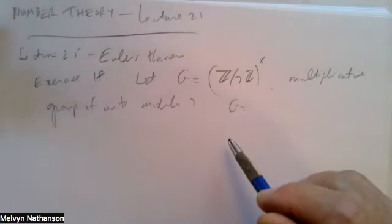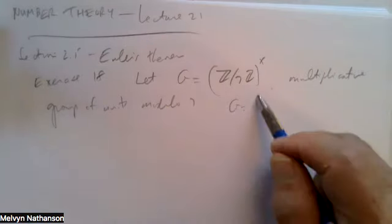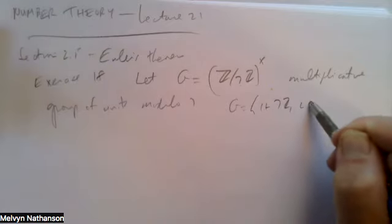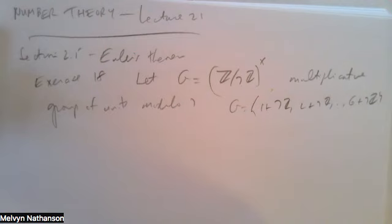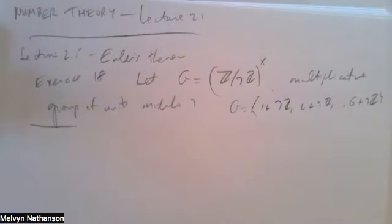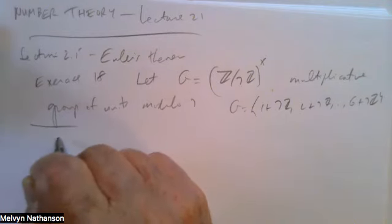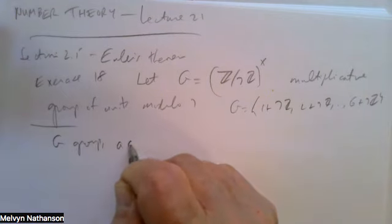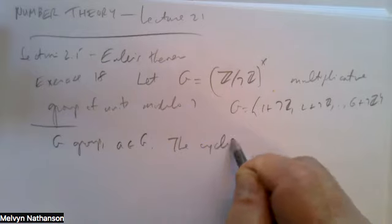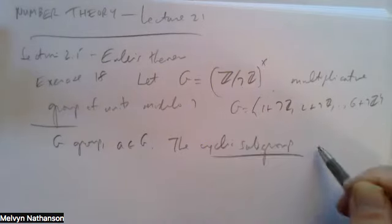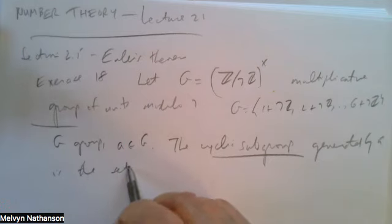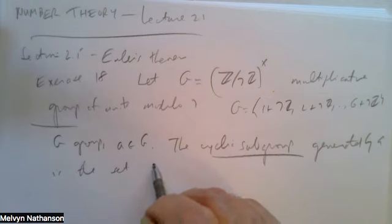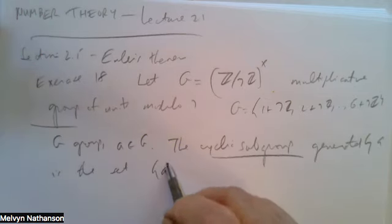Since 7 is prime, the congruence classes relatively prime to 7 are 1 through 6: 1+7Z, 2+7Z, up to 6+7Z. We want to find all the cyclic subgroups of G. Recall the definition: if G is a group and A is any element of G, the cyclic subgroup generated by A is the set consisting of all powers of A, A^k for all integers k.